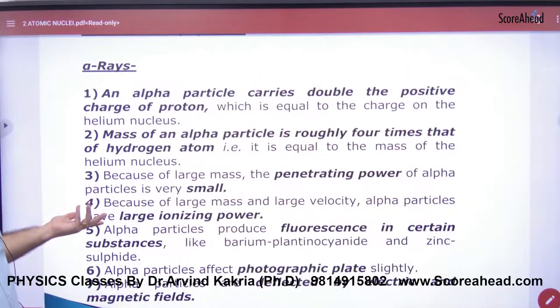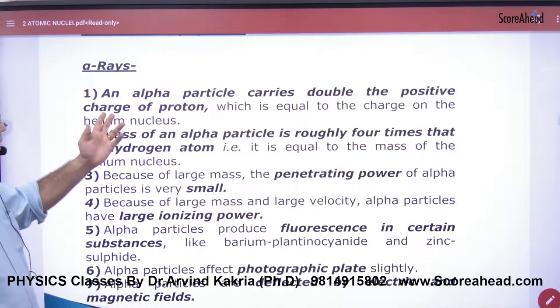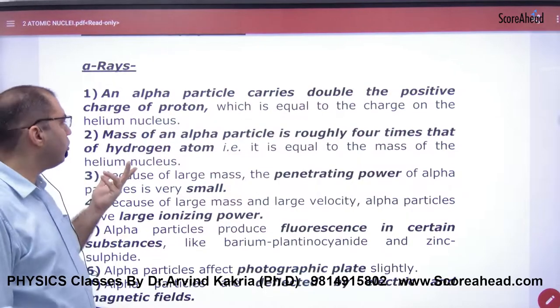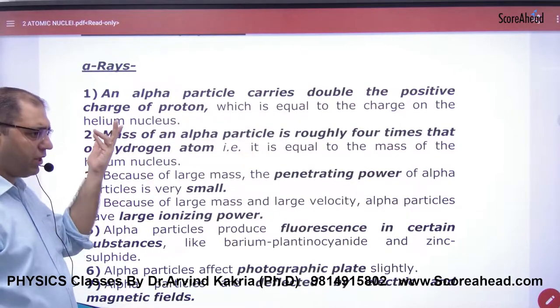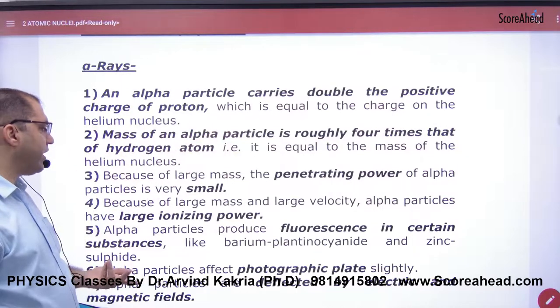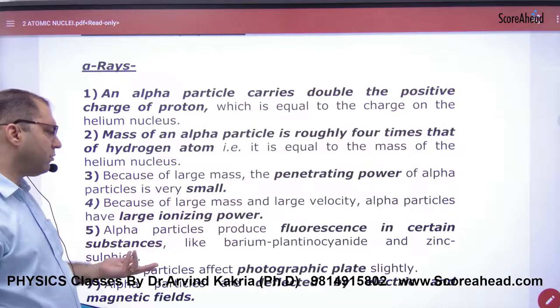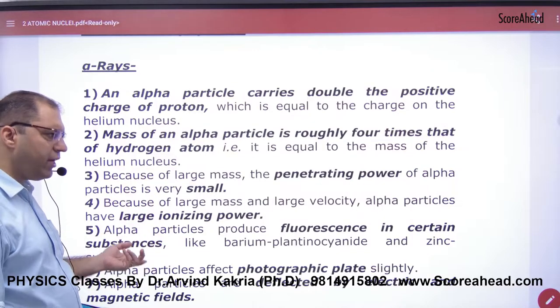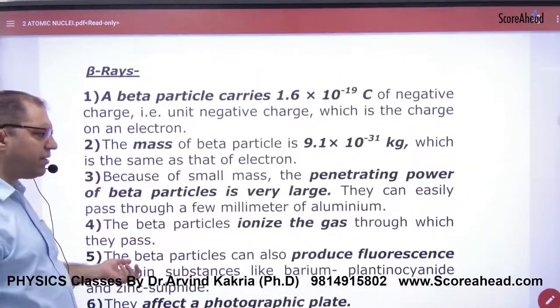The alpha particle has double the charge of a proton—it is a helium nucleus. The mass of an alpha particle is four times that of a hydrogen atom, and its penetrating power is small.